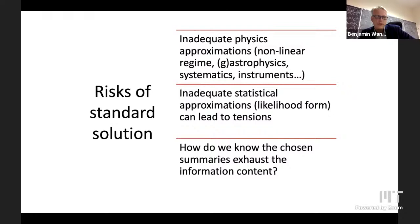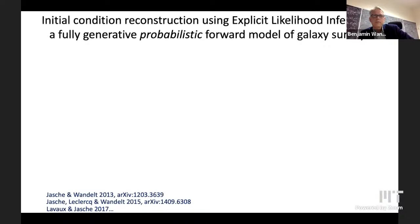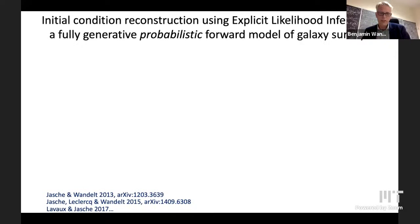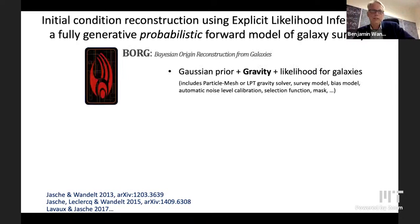In order to do that, you would have to build a full explicit likelihood approach that links these initial conditions — remember that ball with the initial curvature perturbations — through a fully generative probabilistic forward model to the galaxies that you observe in your survey. We call this BORG. This is basically an origin reconstruction — going back to the initial conditions from galaxies. It also has the allusion to the notion of incorporating all of the information. What we assume is a Gaussian prior for the initial perturbations, for which there is good both theoretical and observational support.